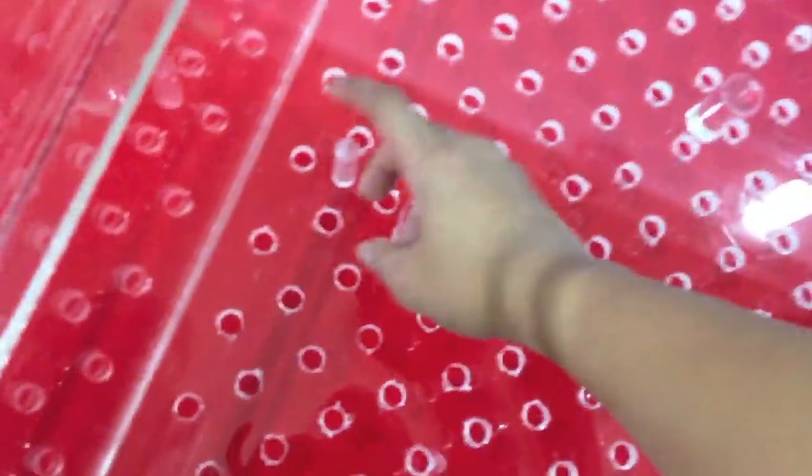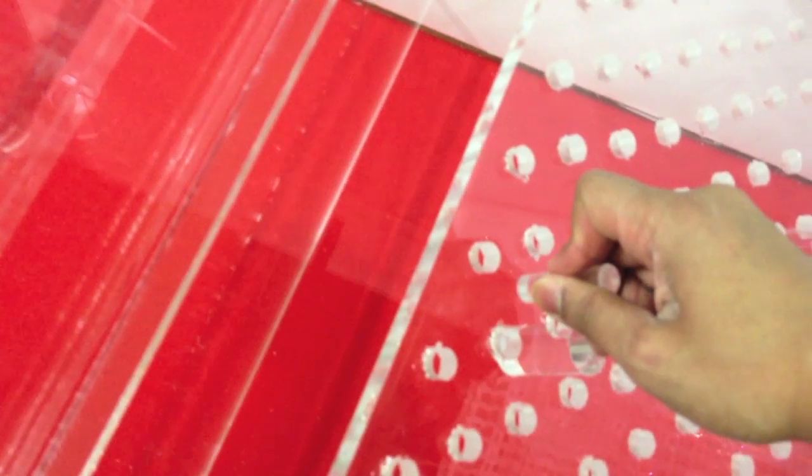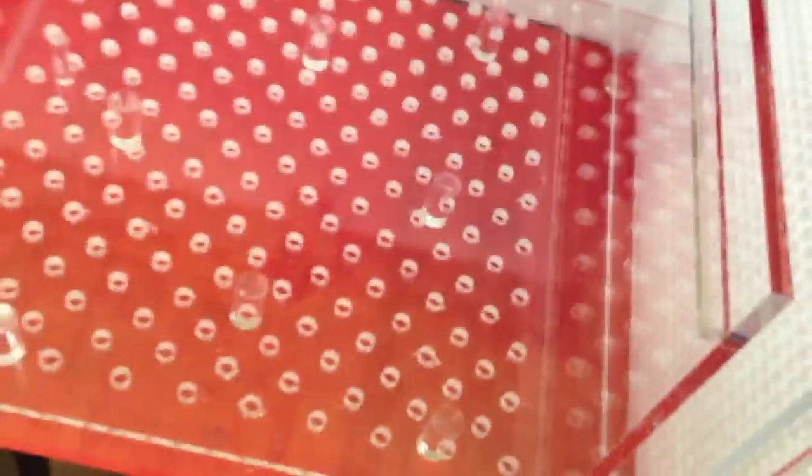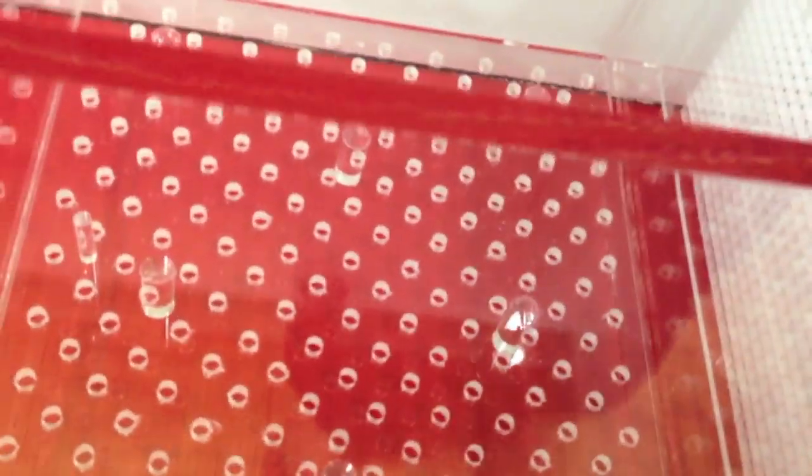The bottom section here, again that knob that you have seen from the front, it actually just pulls this out and then we can definitely take the bottom plate right out to again, clean or if there's anything trapped below that we want to get to, it comes easily off.